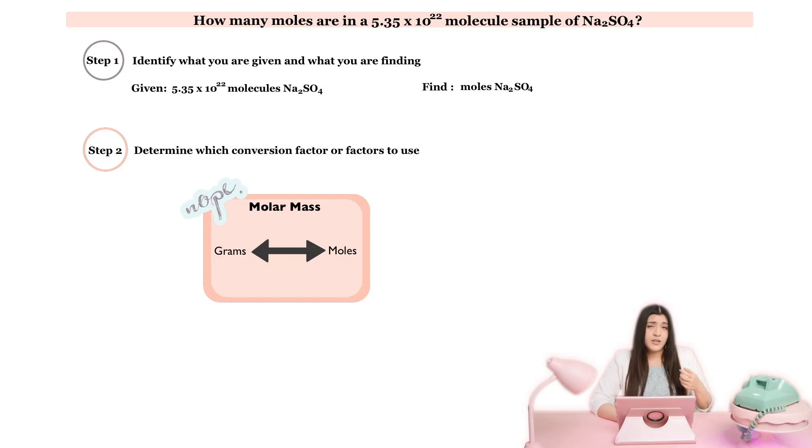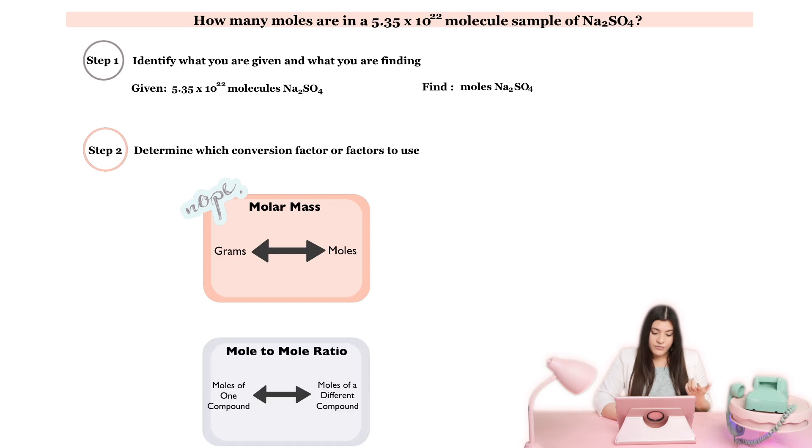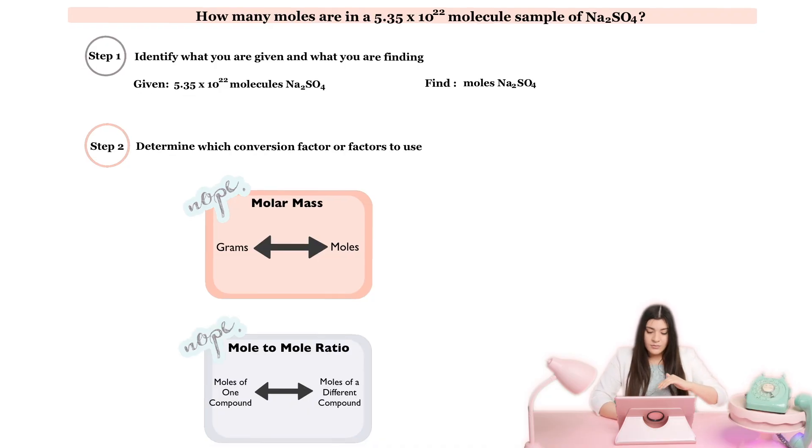Let's see what other conversion factor we can possibly use. Our other type of conversion factor is when we're doing a mole to mole ratio. For this we are only going from moles of one compound and then we're changing the compound. So if we're changing the compound we will use a mole to mole ratio. However, here we said we're keeping the exact same compound so nothing's changing, so once again mole to mole ratios we're not using that.